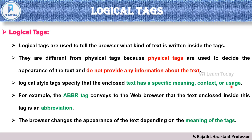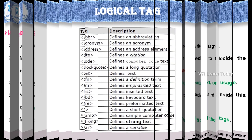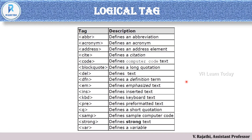The name itself describes the logical tag. For example, ABBR — in that tag, it conveys to the web browser that the text enclosed inside the tag is an abbreviation. ABBR is the abbreviation tag; you can easily understand it. The browser changes the appearance of the text depending on the meaning of that tag. With a logical tag, we can understand the meaning, whereas a physical tag does not convey that.